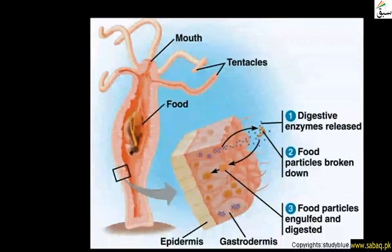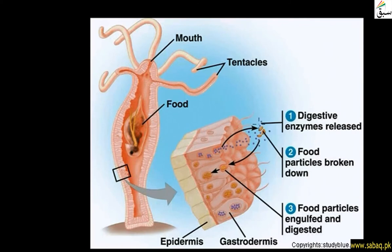For food transportation, after food intake, special cells secrete enzymes which are present in the gastro-vascular cavity, where digestion takes place. After digestion, particles are taken into the cells by endocytosis, meaning the cell has engulfed the digested material.